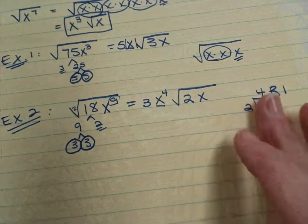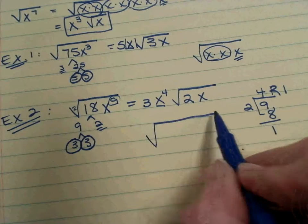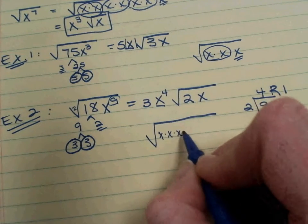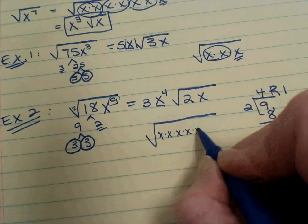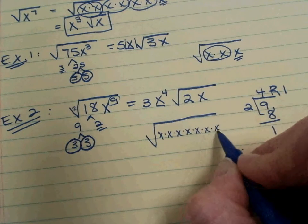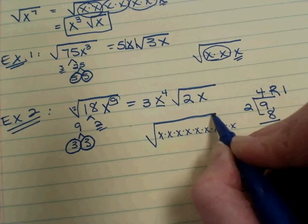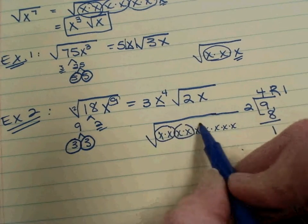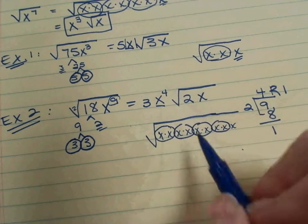You can also always revert back to the definition of exponents. And write out all your x's in 1, 2, 3, 4, 5, 6, 7, 8, 9. Make pairs. 4 pairs. 1 left over.